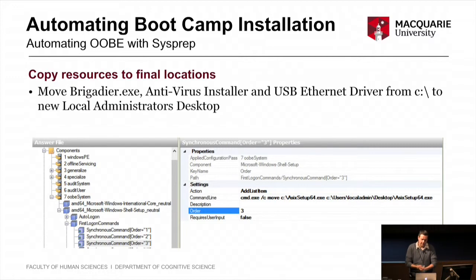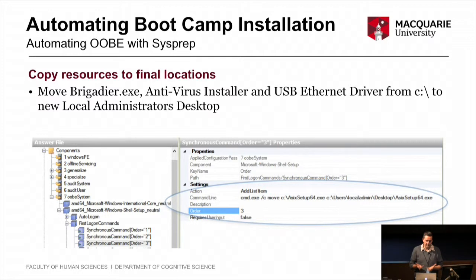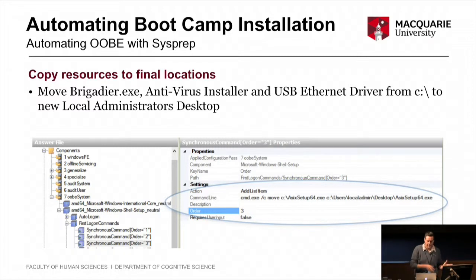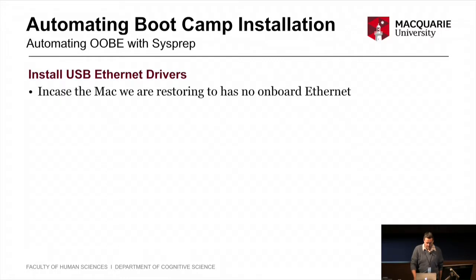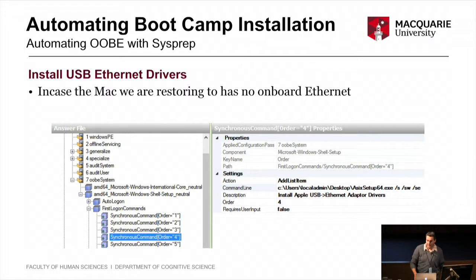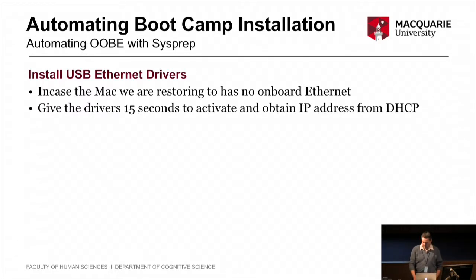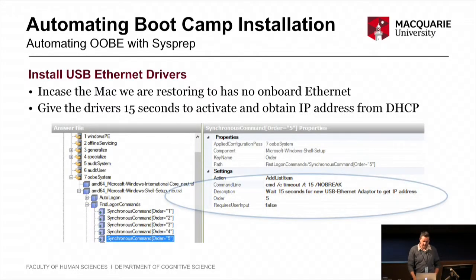This step is specific to Boot Camp. If a machine has been imaged and it's booting up but has no built-in Ethernet, it won't be online, so downloading drivers will fail. At this stage, the USB-to-Ethernet dongle driver we saved to the C drive — along with other things we'll use in the script — we script a command to move them to the new local administrator's desktop. Then we add a command to install the Ethernet driver for that USB card. Once it's installed, we tell sysprep to pause for 15 seconds to give the Ethernet card just long enough to activate and get a DHCP address. None of this is necessary if the computer has built-in Ethernet, but it doesn't hurt.